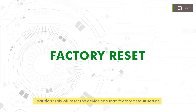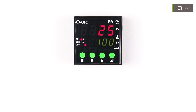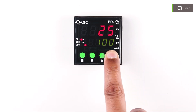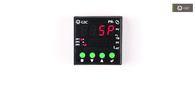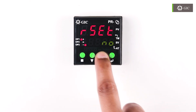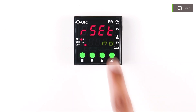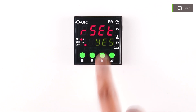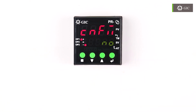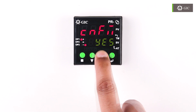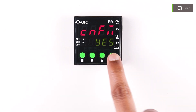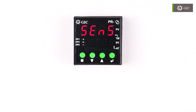For factory reset, press the enter key for 3 seconds to enter into the main menu. Then using the scroll up key, go to R set, then press enter. Using the scroll up key, change it to yes, then press enter. Then select confirm yes by using the scroll up key and press enter. This will reset the device.